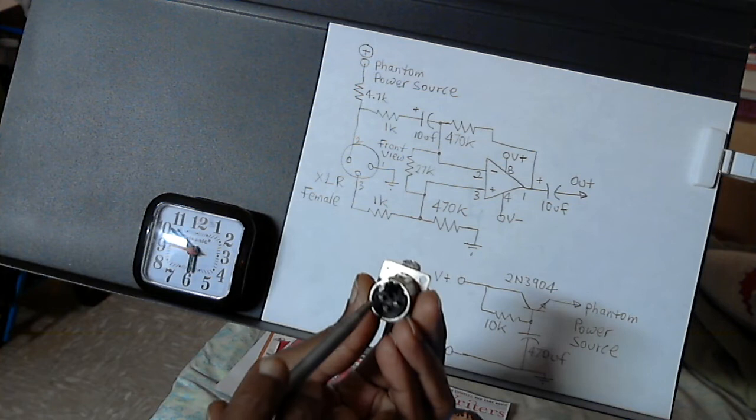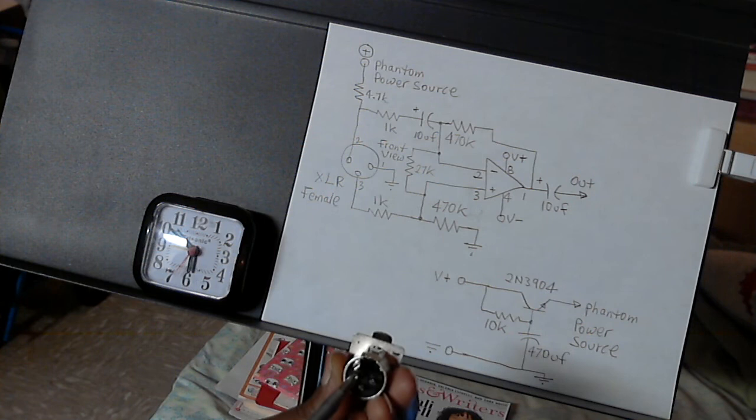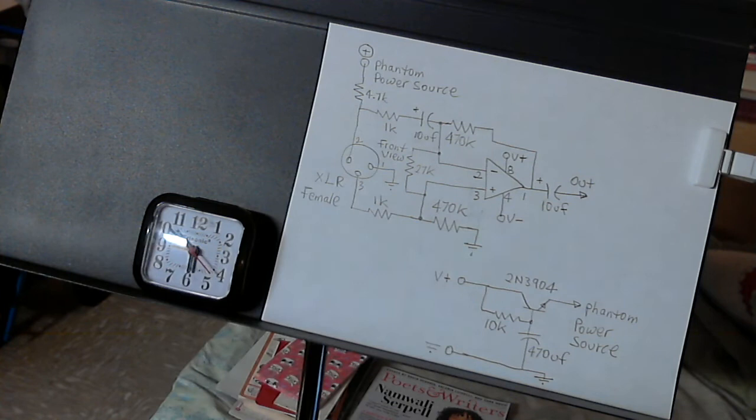This is pin 1, this is pin 2, and this is pin 3. Pin 2 is hot, pin 3 is cold, pin 1 is ground. Pin 1 is ground, pin 3 is cold, pin 2 is hot.